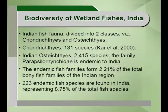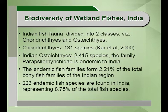Regarding the biodiversity of wetland fishes in India, they can be divided into two classes: Chondrichthyes, with 131 species, and Osteichthyes, with 2,415 species. The family Parapsilorinkidae is endemic to India and there are 223 endemic fish species in India, representing 8.7 to 8.8 percent of the total fish species, while 2.21 percent of the bony fish families are also endemic to the region.